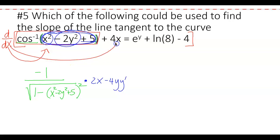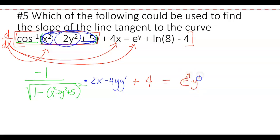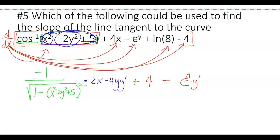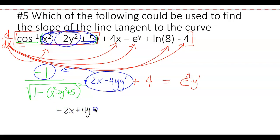Moving to the next terms: the derivative of 4x is simply 4. The derivative of e^y is e^y times y', since it's a y expression. Terms that are just constants like ln(a) have zero derivative and disappear. Simplifying, we move the inside expression to the numerator and distribute the negative 1, giving us (negative 2x + 4y·y') over the square root of (1 minus the inside squared).